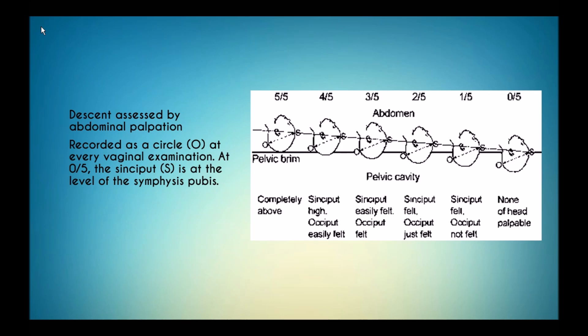The descent is assessed by abdominal palpation. It is recorded as a circle O at every vaginal examination. The figure here shows the various palpatory findings that one may get to observe using this method, known as Crichton's method.